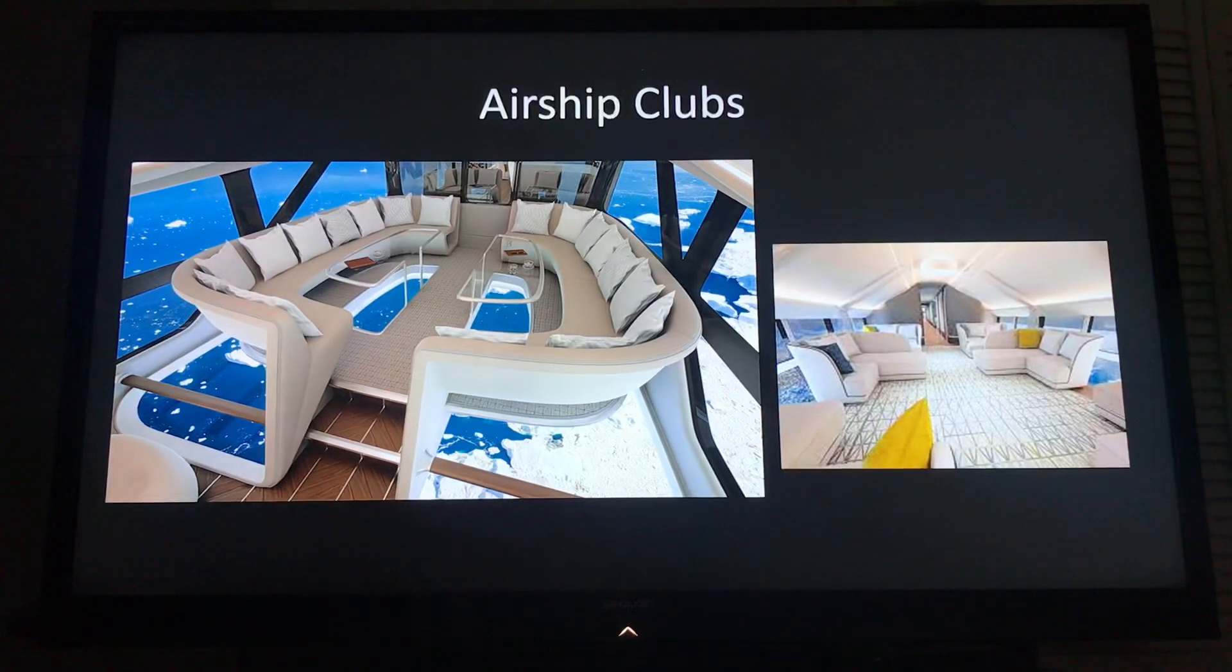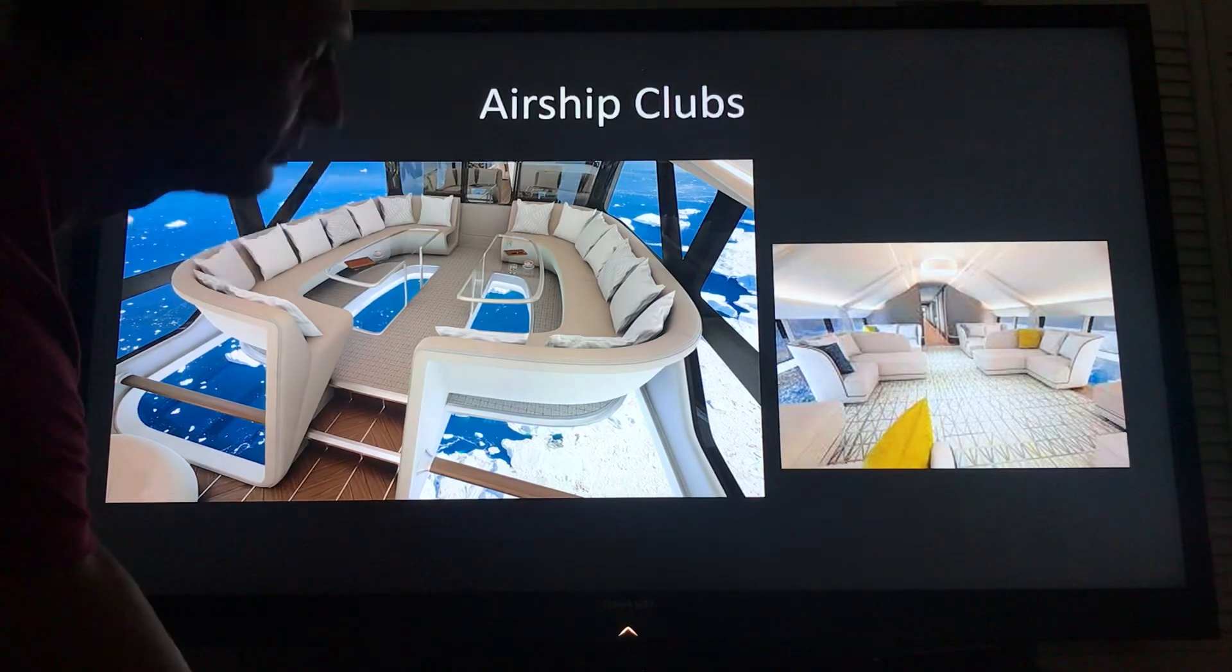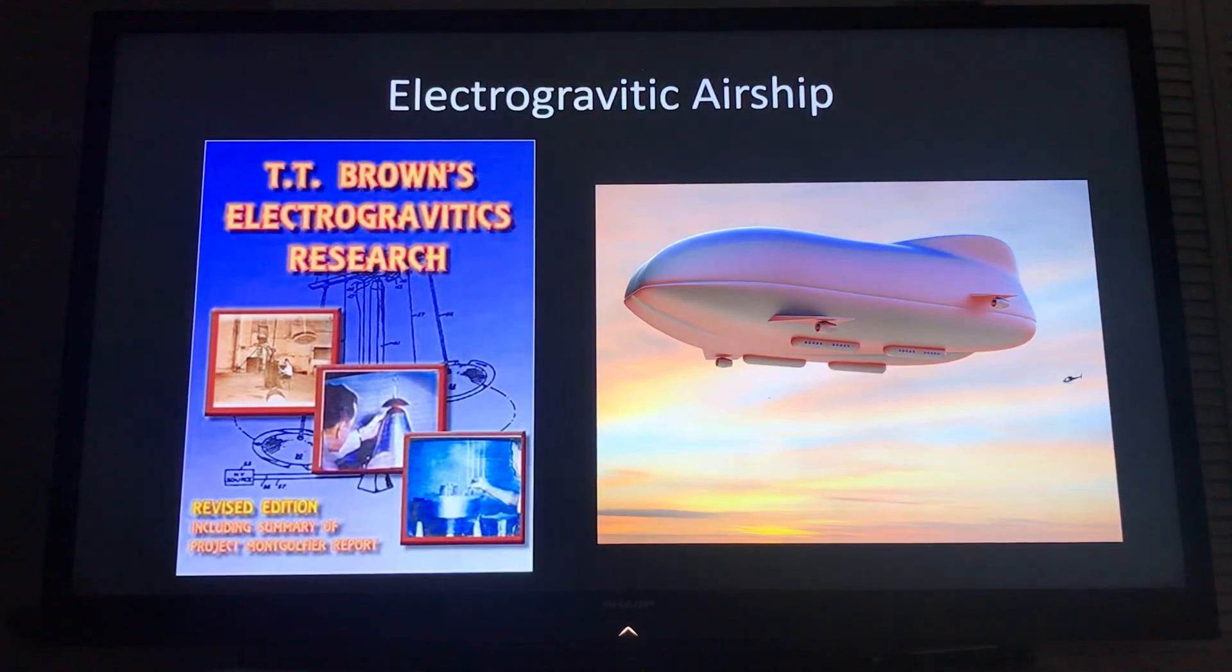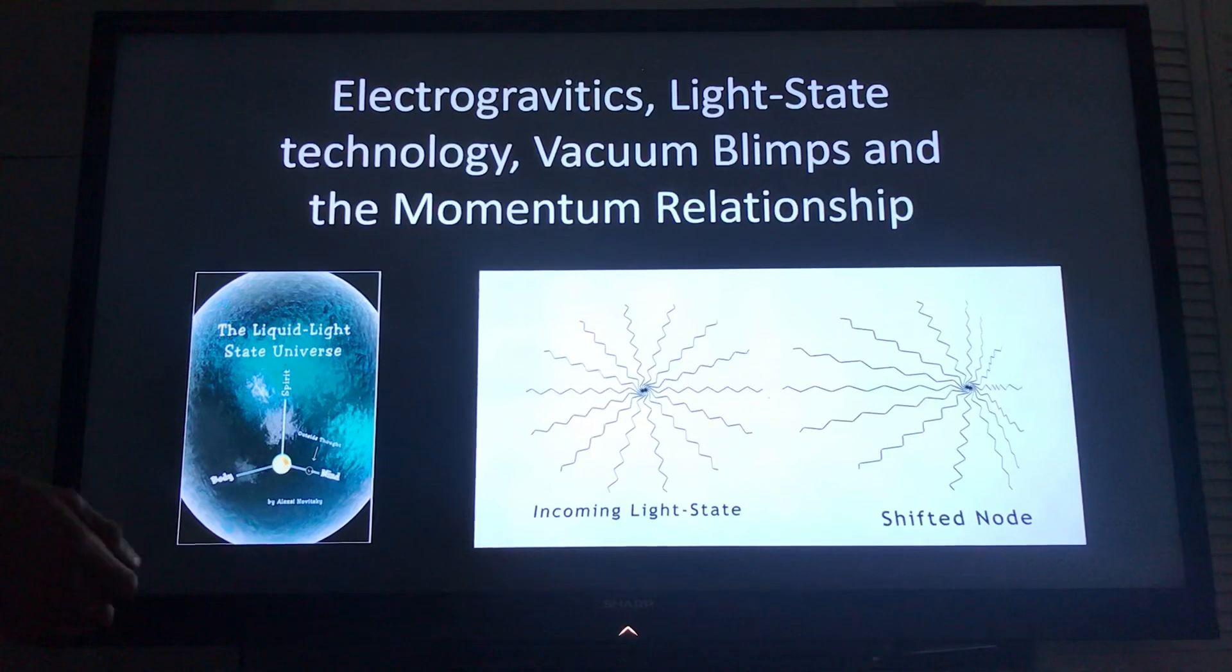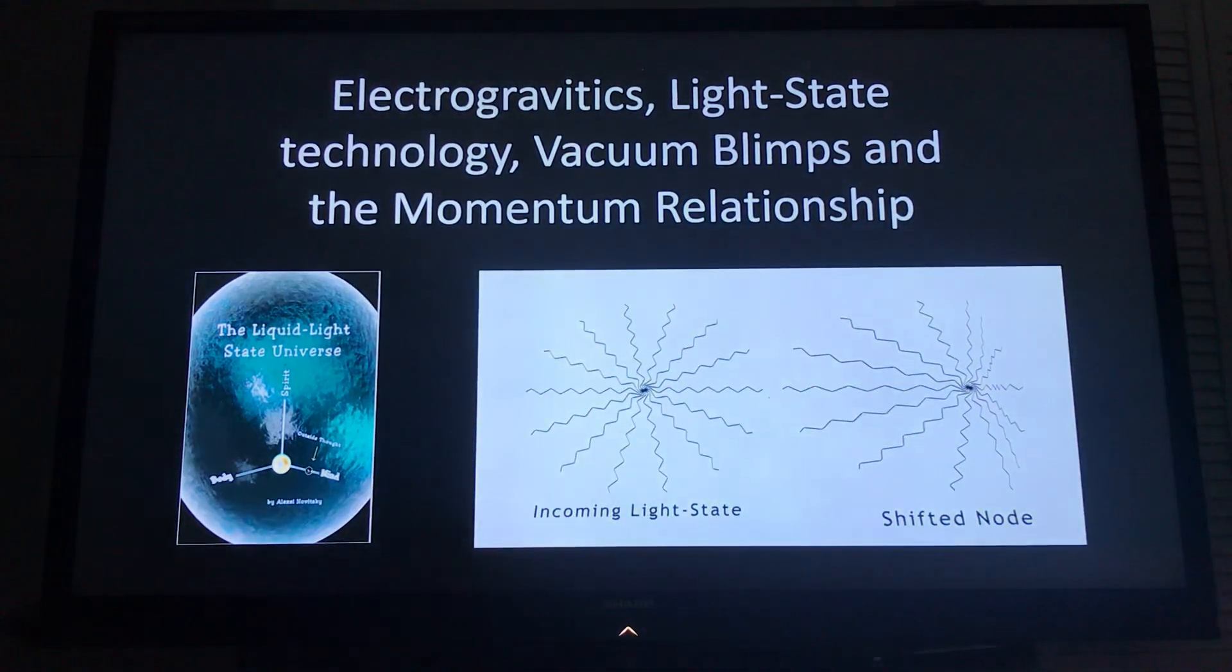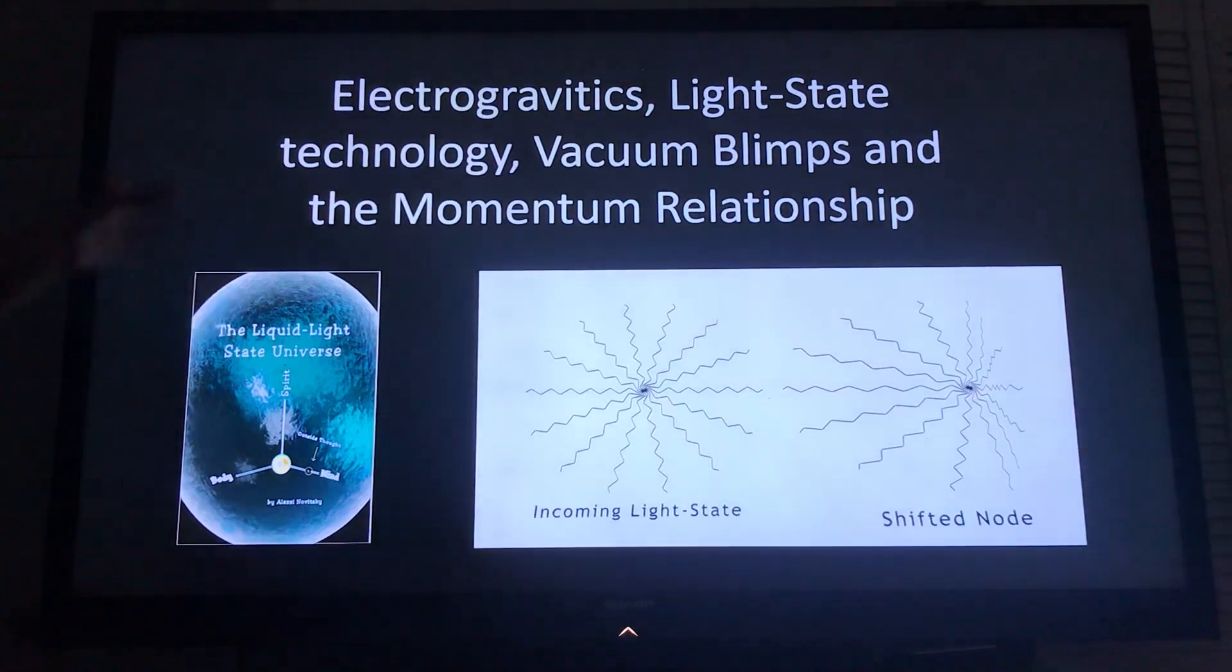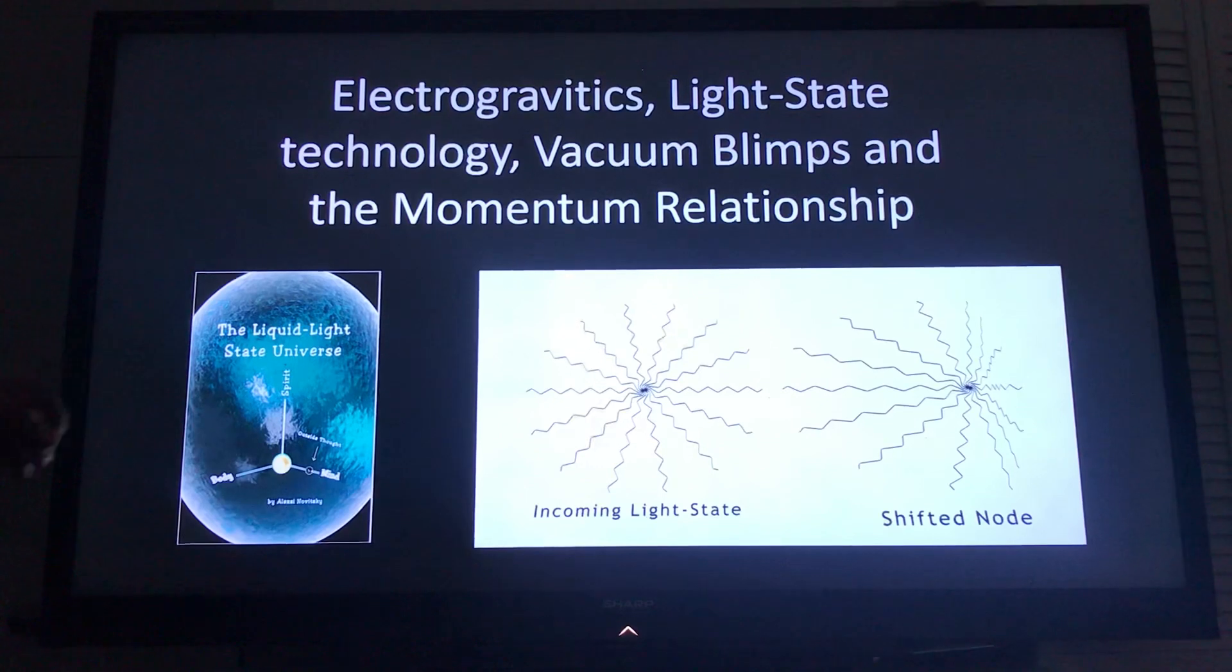So the inside of some of these airships, you know, extremely extravagant. You can imagine your nicest looking yachts, that's what the insides of these airships look like. Extremely comfortable living spaces, top-of-the-line luxury, high quality stuff. And so it doesn't take too far of a reach to say well this has been around for a hundred years, this has been around for a couple hundred years, so now let's combine the two and you get electrogravitic airships. Now I just want to talk about the momentum relationship because people seem to be confused about the momentum thing with the UAPs or UFOs. So now we're gonna say electrogravitics, light state technology, vacuum blimps and the momentum relationship.